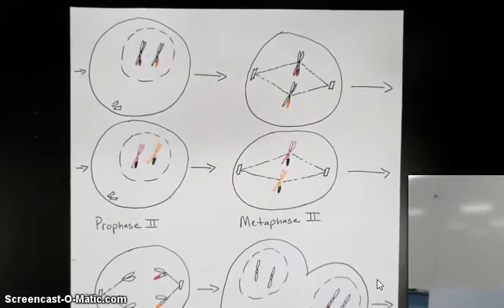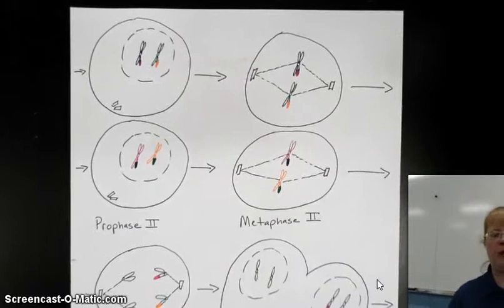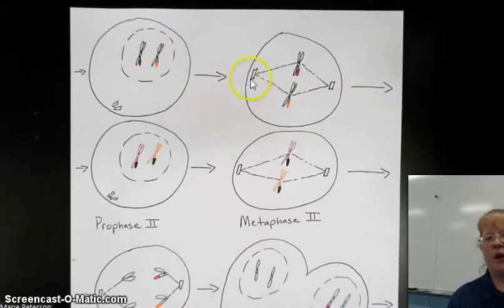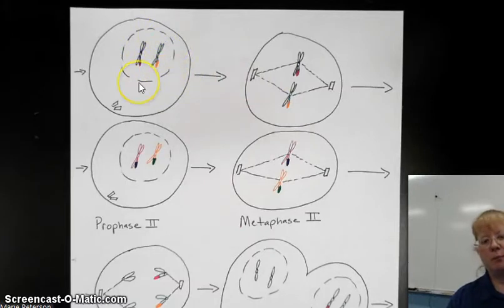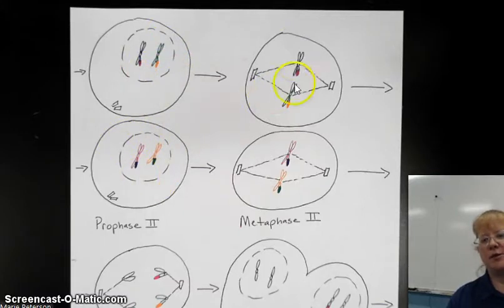Our next picture is prophase II. In prophase II, the nuclear membrane is re-breaking up again — you can see it breaking up in both cells. Then in metaphase II, we have sister chromatids lined up in the middle of the cell for each daughter cell.